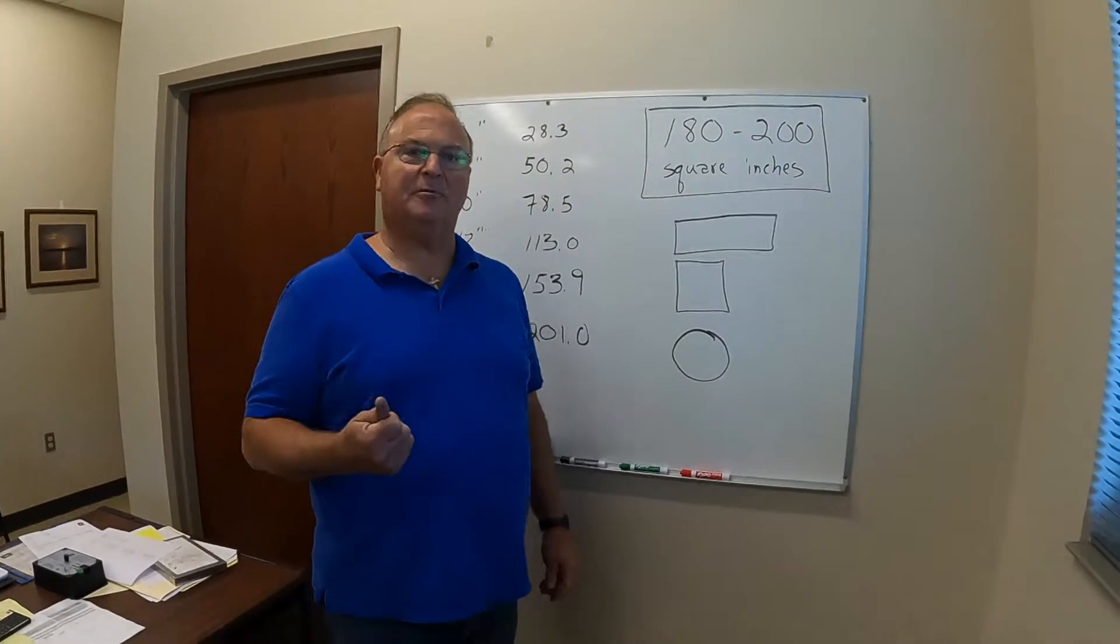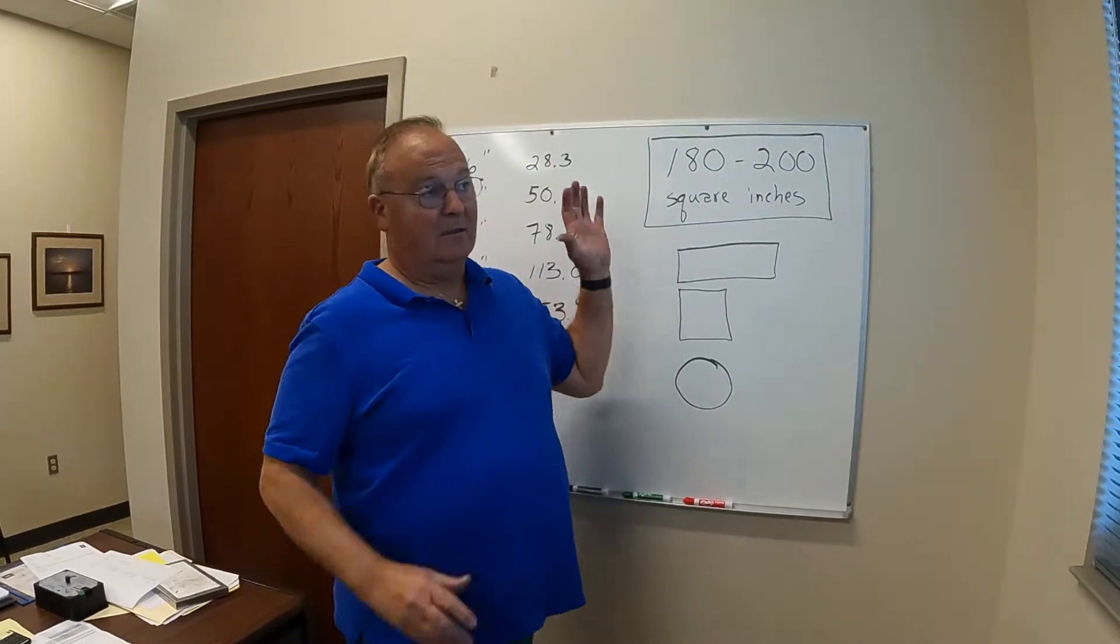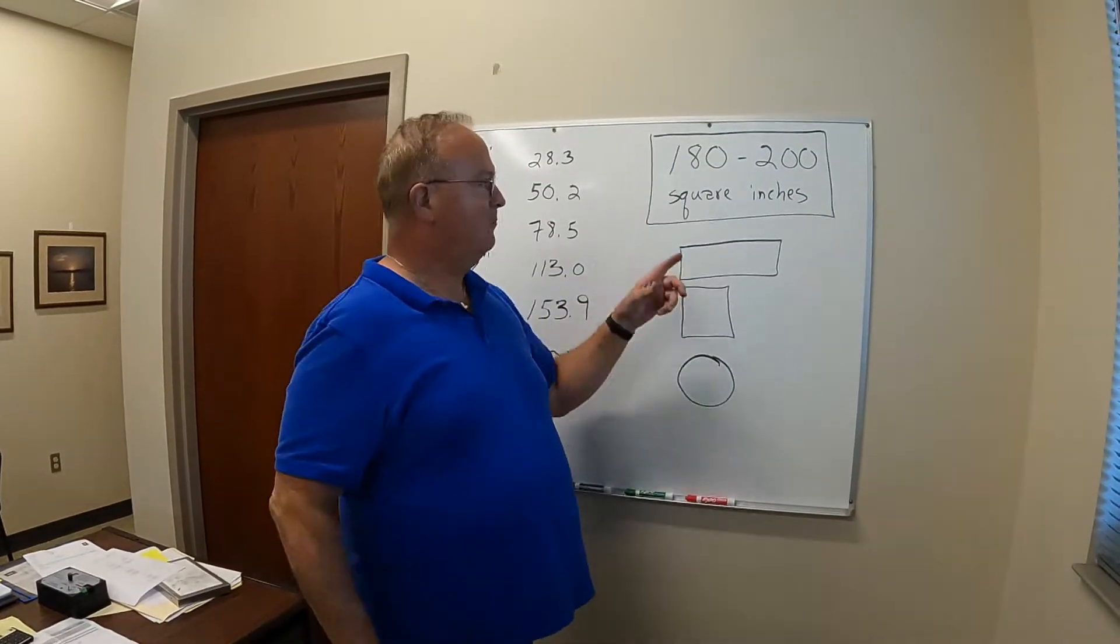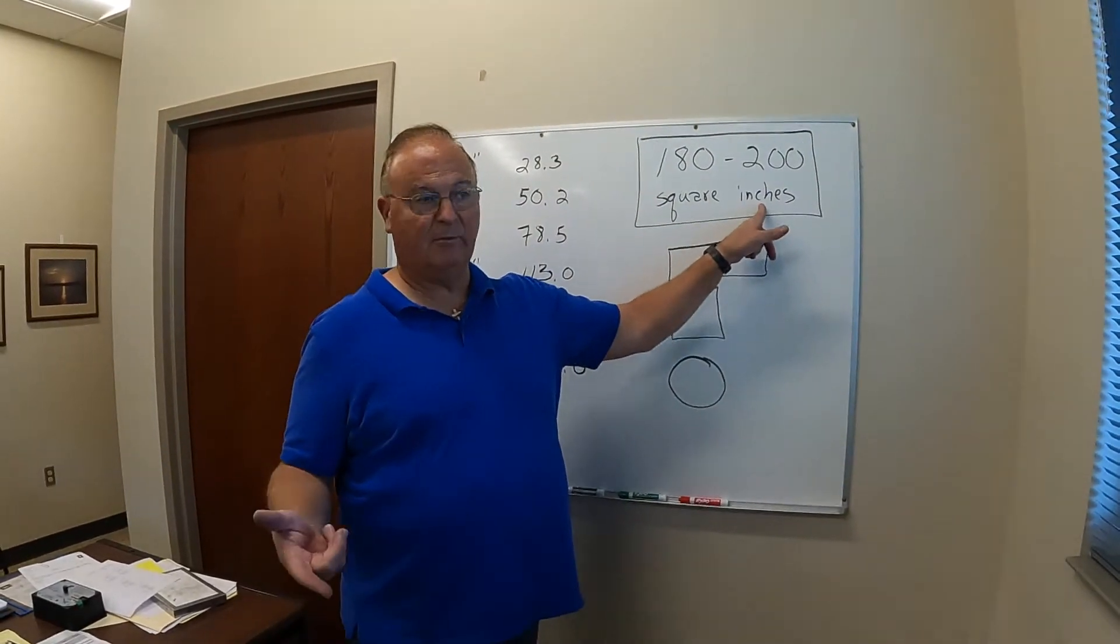So when you're hooking your plenum up to your ducting, as I mentioned, the ducting coming off the plenum, we want between 180 and 200 square inches, so length times width.